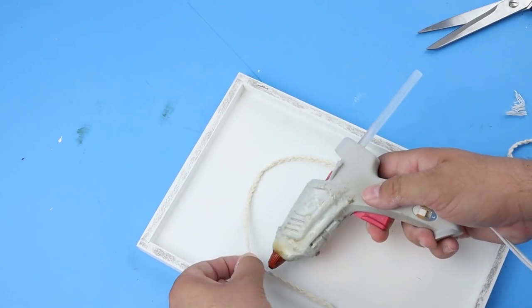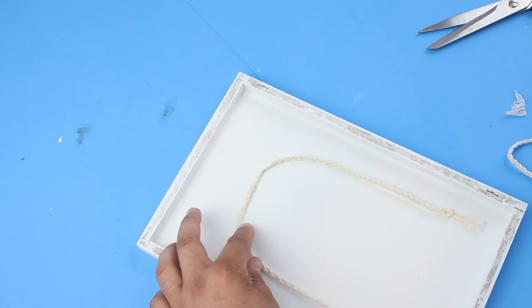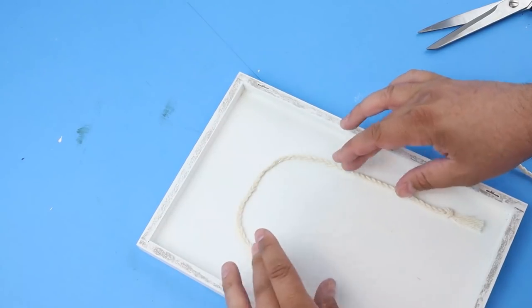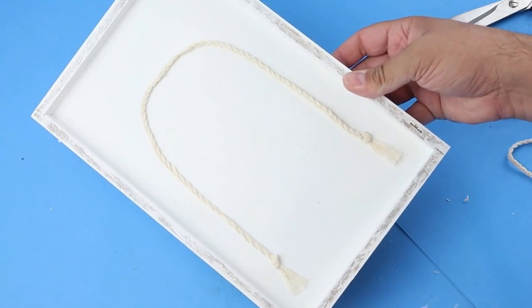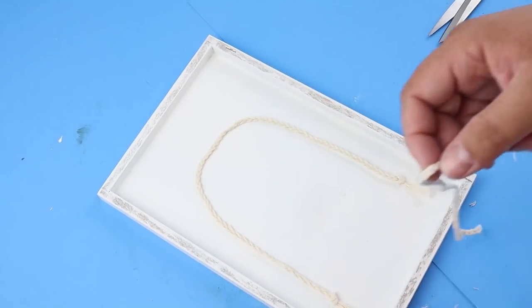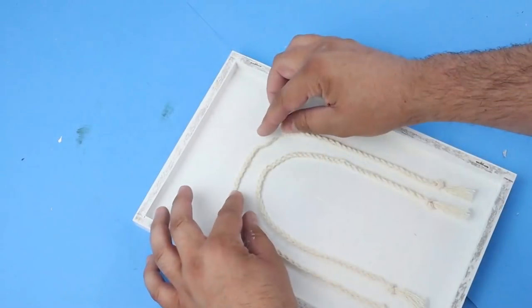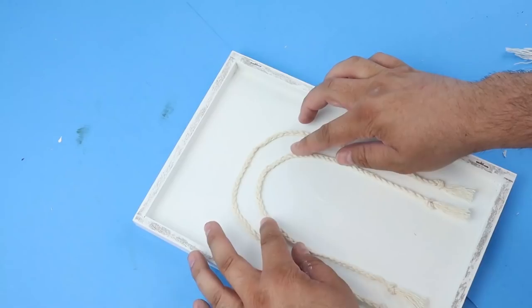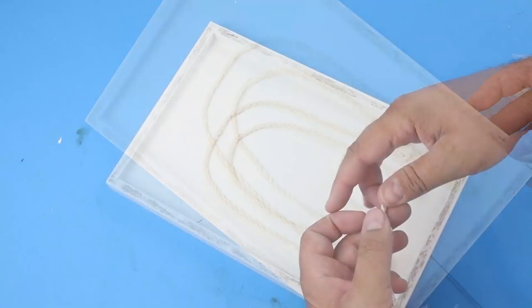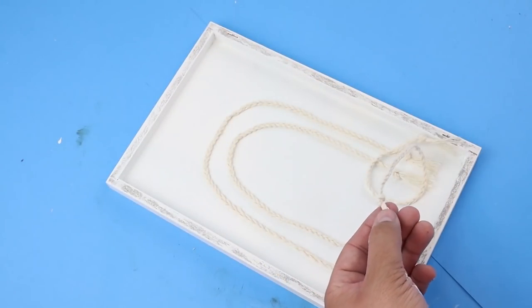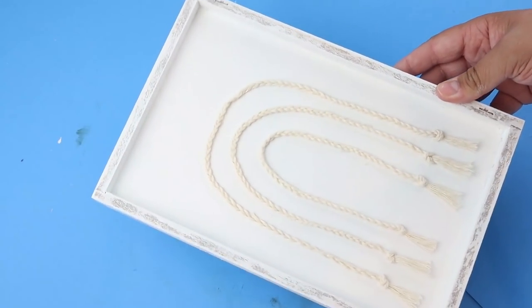And then after our first one, we're just going to repeat that process. And again, you can create however many layers you would like. I ended up going with three, and it's a very simple but I think elegant and pretty project to go in this boho style.